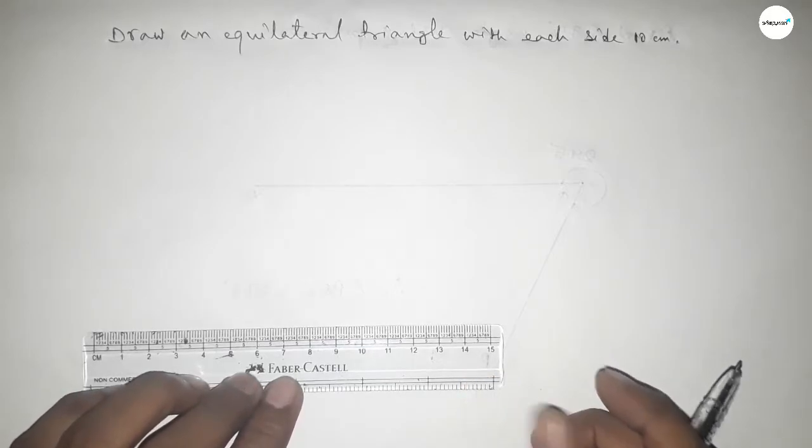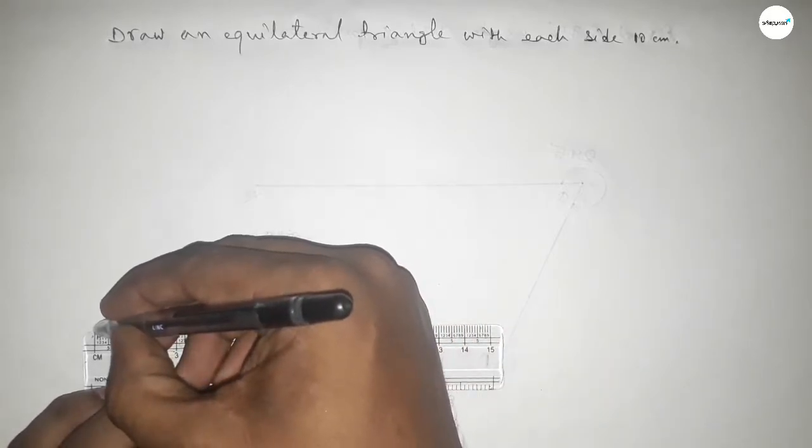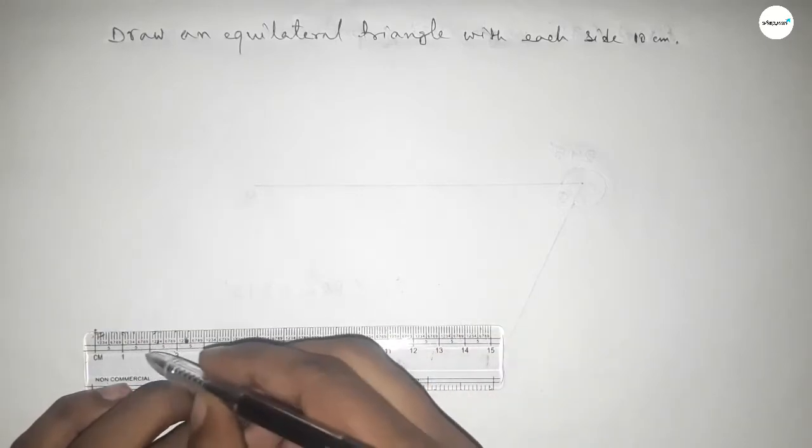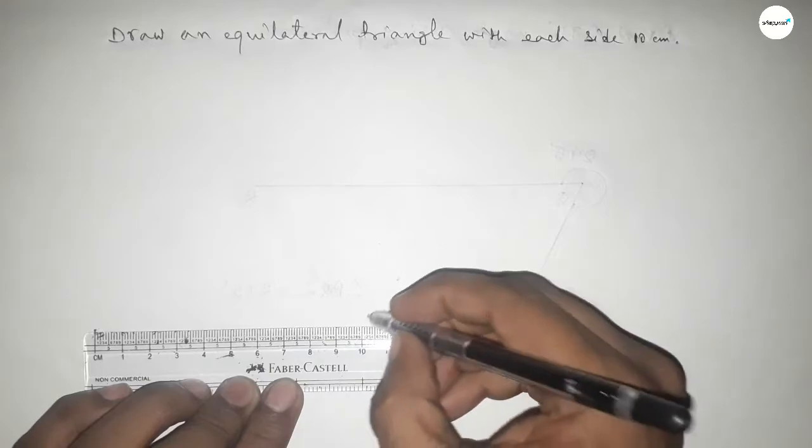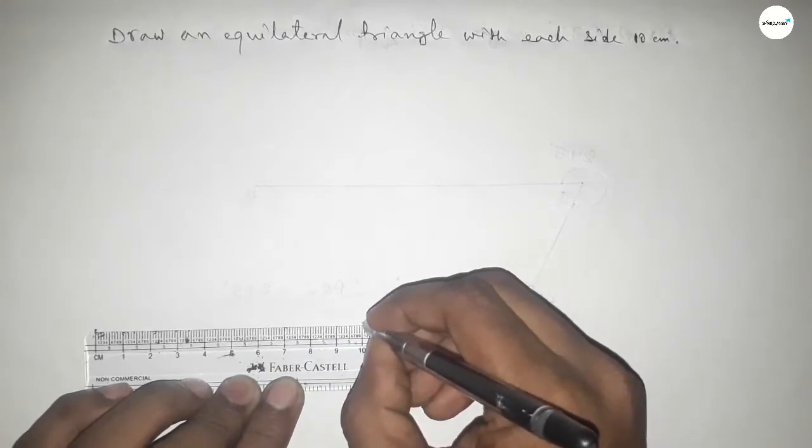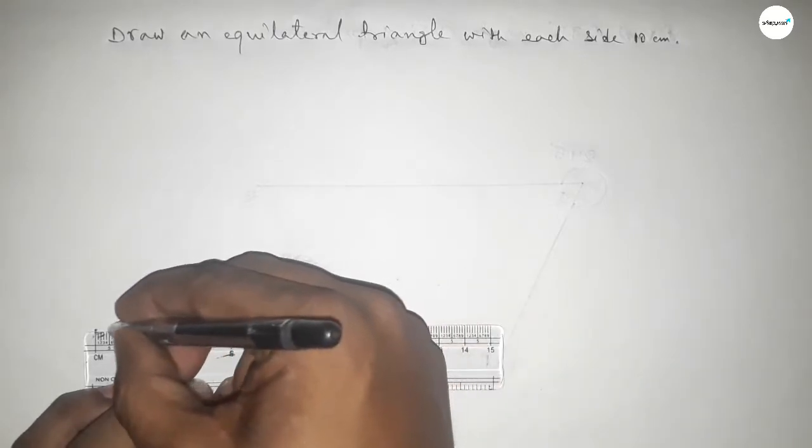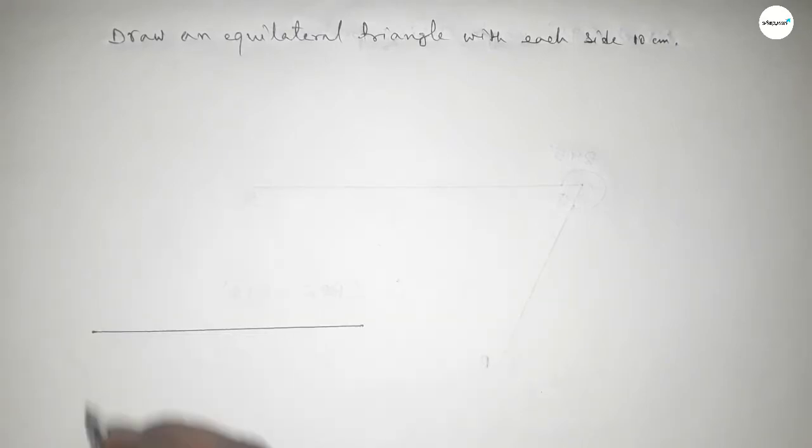So this is starting 0, this is 1, 2, 3, 4, 5, 6, 7, 8, 9, 10. So first draw here a line of length 10 centimeter. Okay, so this is taking A and B. So line AB equal to 10 centimeter.